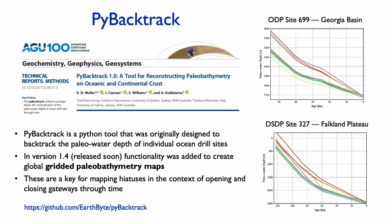In order to determine the causes of the hiatuses, we need to compute the paleo water depth at the time of hiatus formation. And for this, we use PI-Bectrack. PI-Bectrack was originally developed for reconstructing the paleo water depth of an individual site. Here are a couple of examples: the first one is from Georgia Basin on oceanic crust and the second one from Falkland Plateau, which is on continental crust. The grey curve is paleo water depth reconstruction without dynamic topography, and the other curves shown in different colours are different dynamic topography models. In version 1.4 of PI-Bectrack, functionality was added to create global gridded paleo bathymetry maps, and these are key for mapping hiatuses in the context of opening and closing gateways through time.